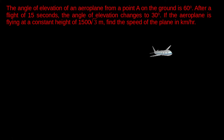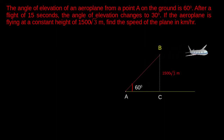Let A be the point on the ground and the aeroplane is at point B. The angle of elevation of the aeroplane from point A is 60 degrees. After the flight of 15 seconds, the aeroplane is at point D, and the angle of elevation from point A changes from 60 degrees to 30 degrees. Given that the aeroplane flies at a constant height of 1500 root 3 meters, we have to find the speed of the plane.